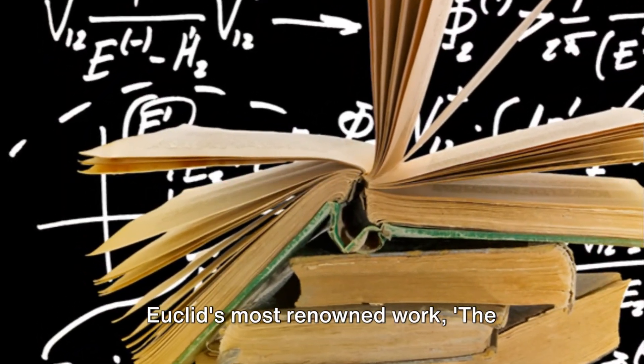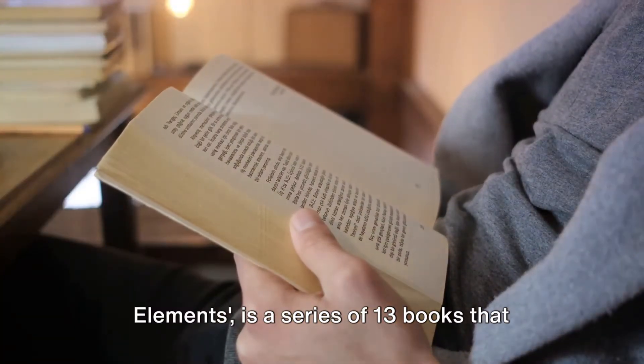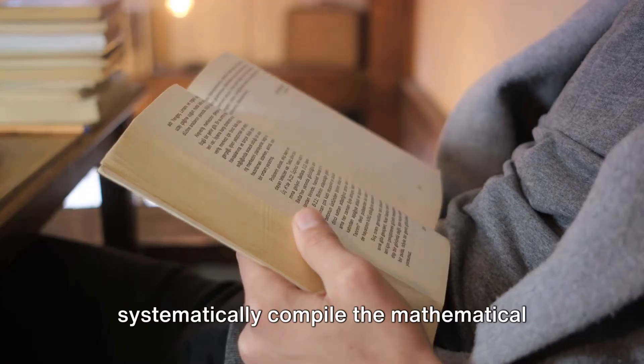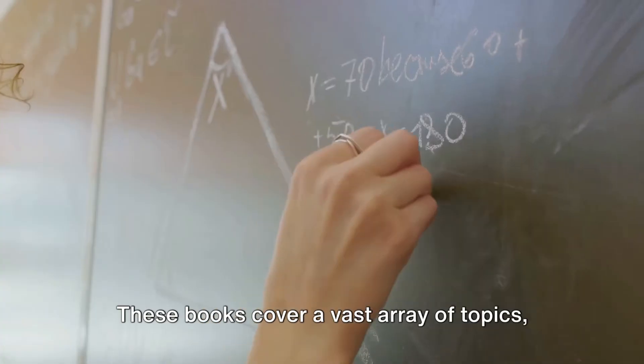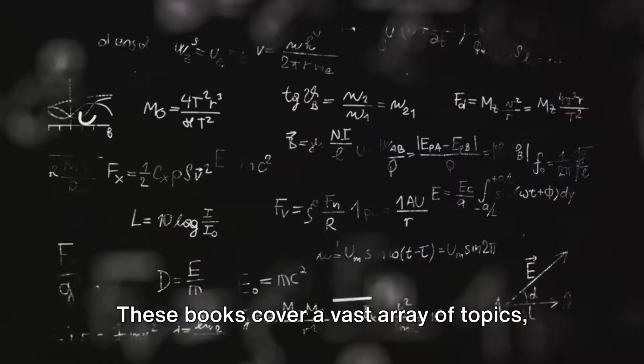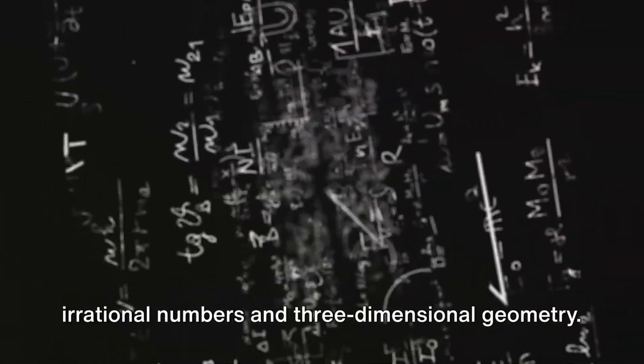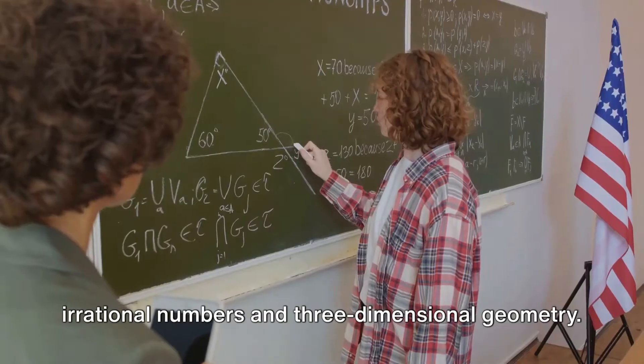Euclid's most renowned work, The Elements, is a series of 13 books that systematically compile the mathematical knowledge of his time. These books cover a vast array of topics, from geometry and number theory to irrational numbers and three-dimensional geometry.